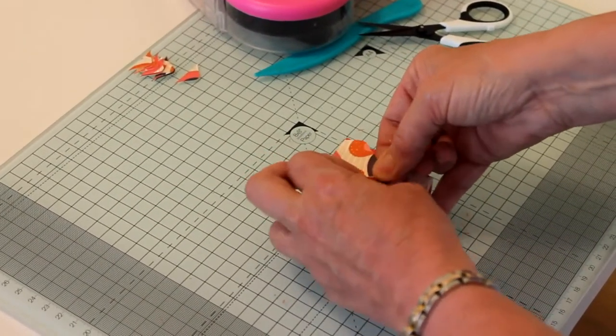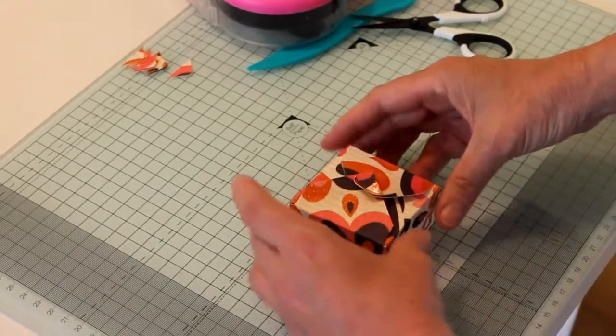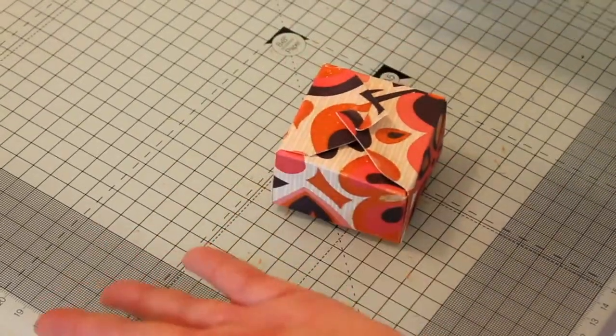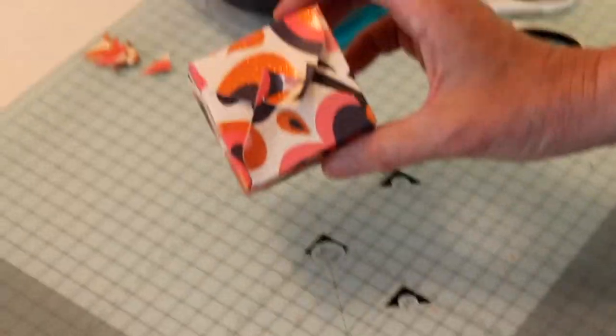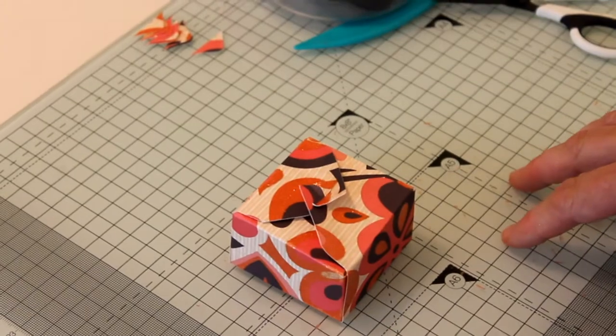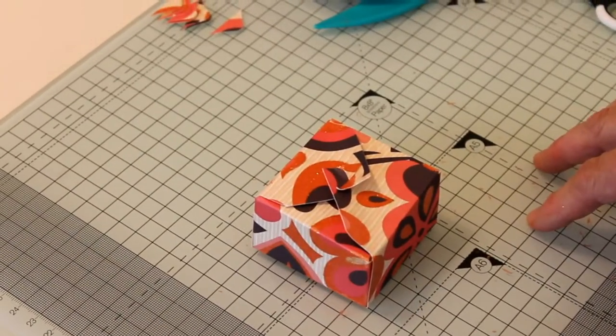And there you have a lovely square box with its own closure, made in minutes. It can be made in any size if you change the dimensions. So I'll be back shortly with another tutorial on the We R Memory Keepers envelope punch board.